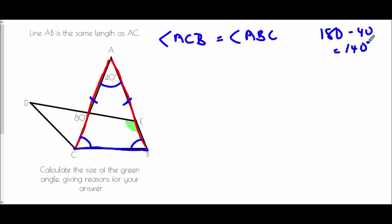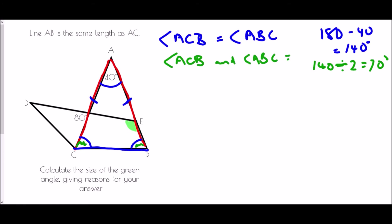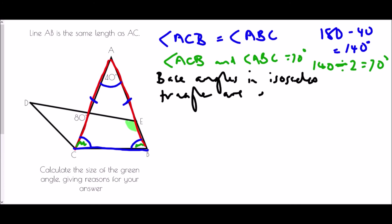Because the isosceles triangle means the other two angles are equal, the 140 degrees is shared equally — so each angle is 70 degrees. Angle ACB and angle ABC both equal 70 degrees. The reason we must give is: base angles in an isosceles triangle are equal. So we've found that both of those angles are 70 degrees.